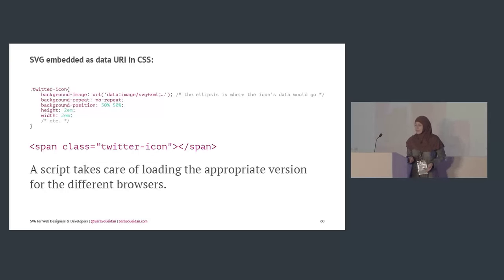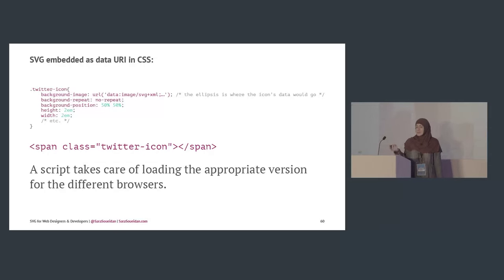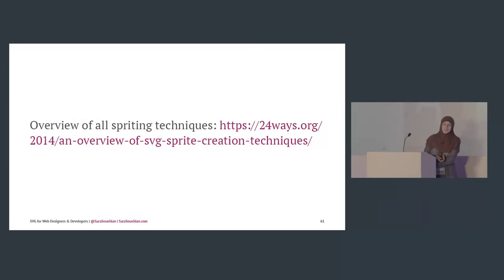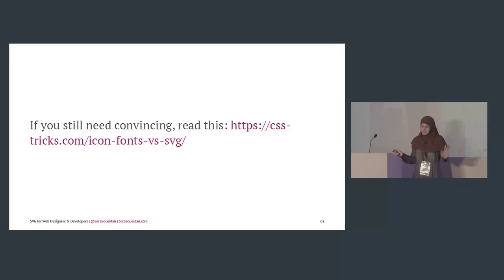You would use it the same way as icon fonts — a class name on a non-semantic element, images added in the stylesheet. An overview of all three spriting techniques is in an article at 24ways.org with more detail on each. If you still need convincing about icon fonts, read the cage-match article by CSS-Tricks. They have no advantage over SVG.